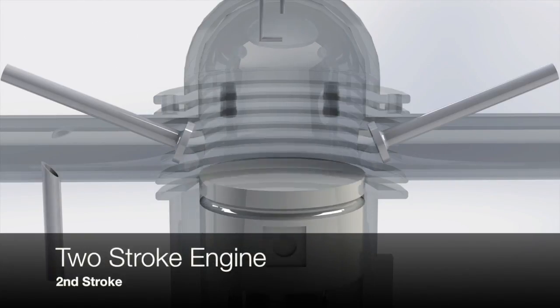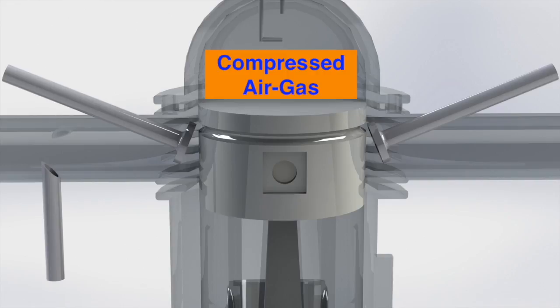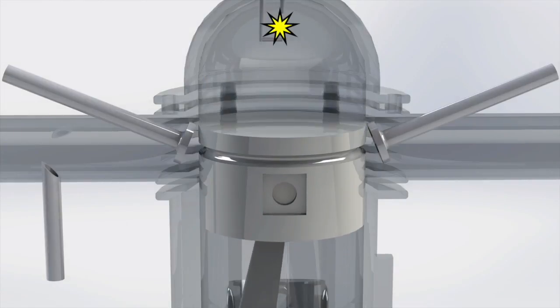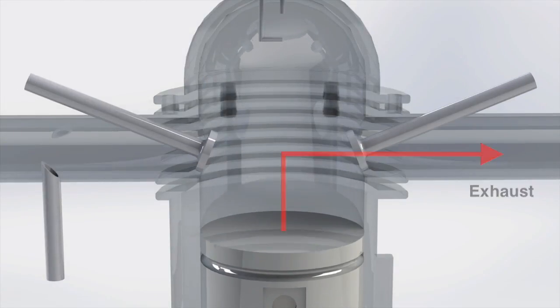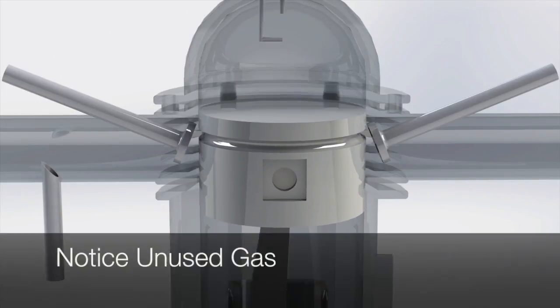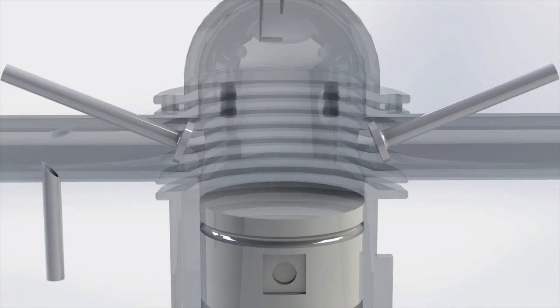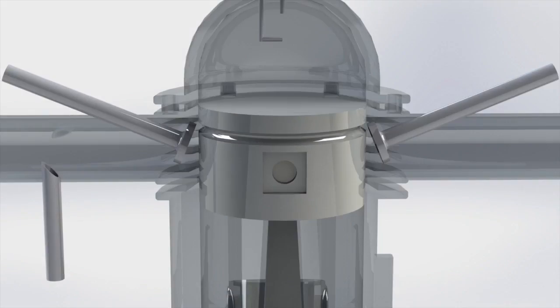Stroke two begins as the piston moves up and the air and gas is compressed. Just as the piston finishes the second stroke, the spark plug ignites the air gas mixture and this is the beginning of the next first stroke. A two stroke engine is less efficient than a four stroke engine because of the opportunity for unspent gas to be exhausted since the intake and exhaust valves are open at the same time.